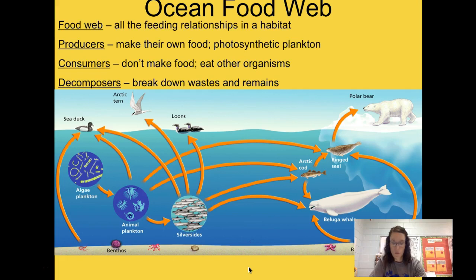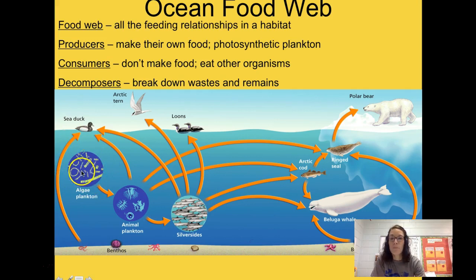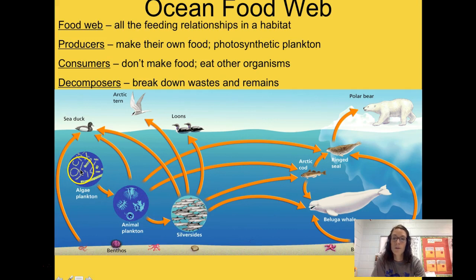Now for our ocean food web review. A food web shows all the feeding relationships in a habitat — it's multiple food chains put together. Producers make their own food; an example in the ocean is photosynthetic plankton, called phytoplankton, shown here as algae plankton. Algae makes its own food from sunlight. Then we have consumers: the zooplankton consumes the algae plankton, and various fish, beluga whales, and ringed seals are all consumers.